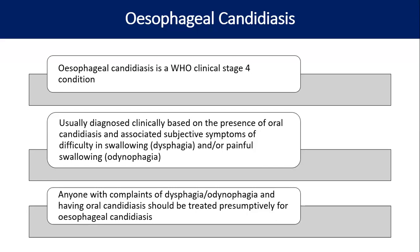Treatment is fluconazole 200 mg orally for 14 to 21 days, checking the response to treatment after seven days. If there is good response, continue fluconazole for 10 days to two weeks. The difference is that in oral candidiasis we treat for one week, whereas in esophageal candidiasis we treat for two to three weeks.